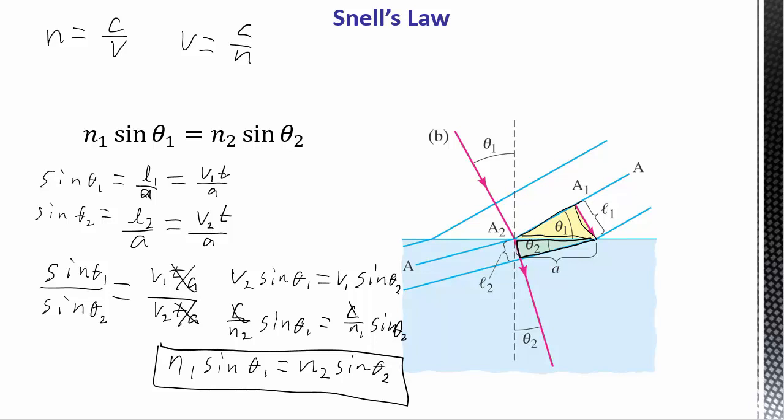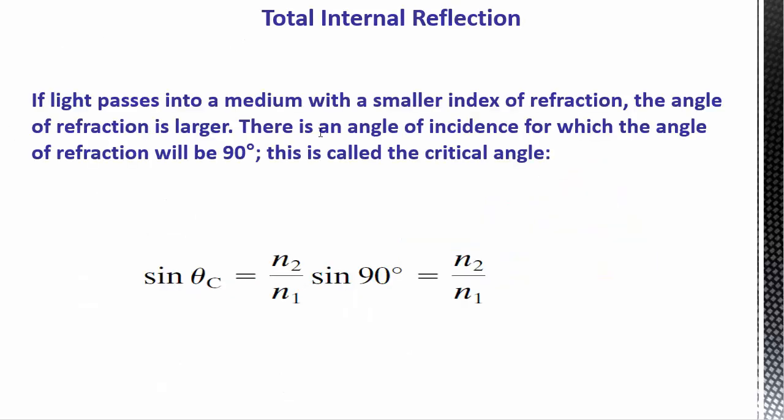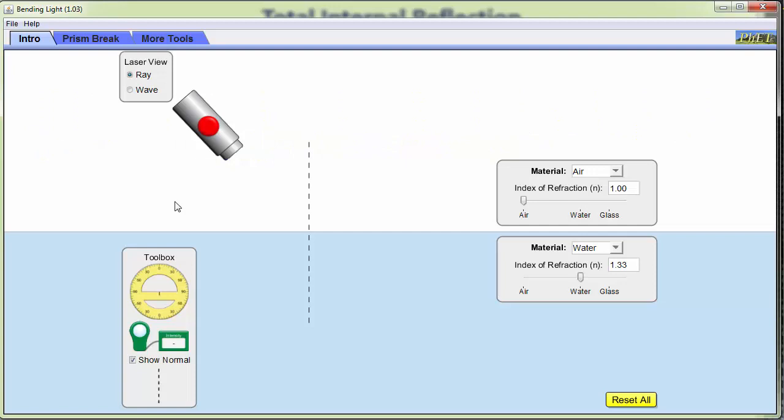Another property that happens with refraction is what we call total internal reflection. And before I get into this, let me show you. This is another PhET applet. So you go to PhET.colorado.edu. This one is called bending light. So here I've got my light ray.